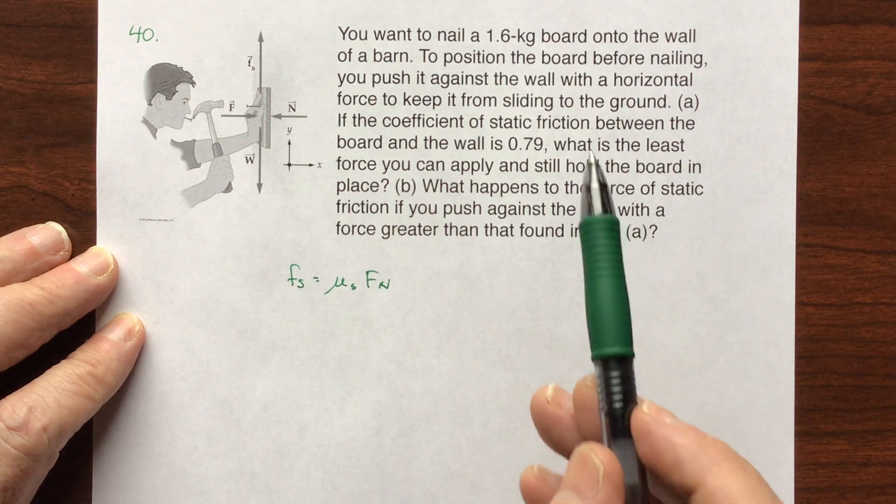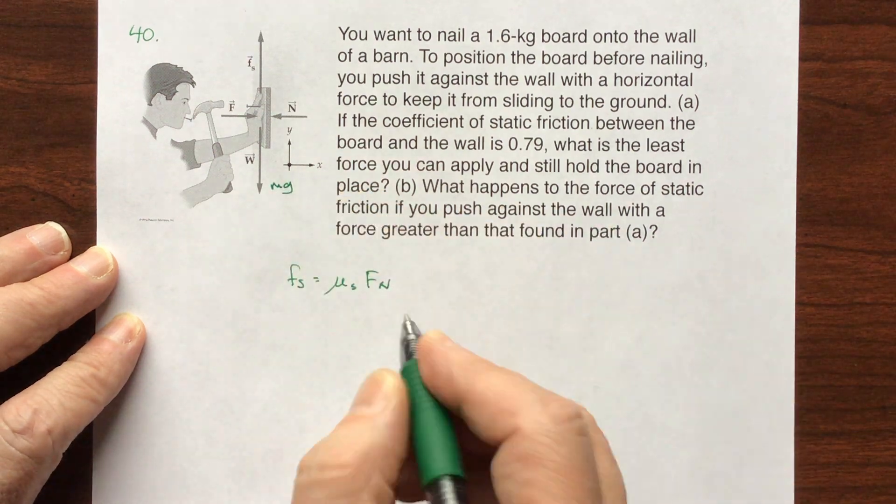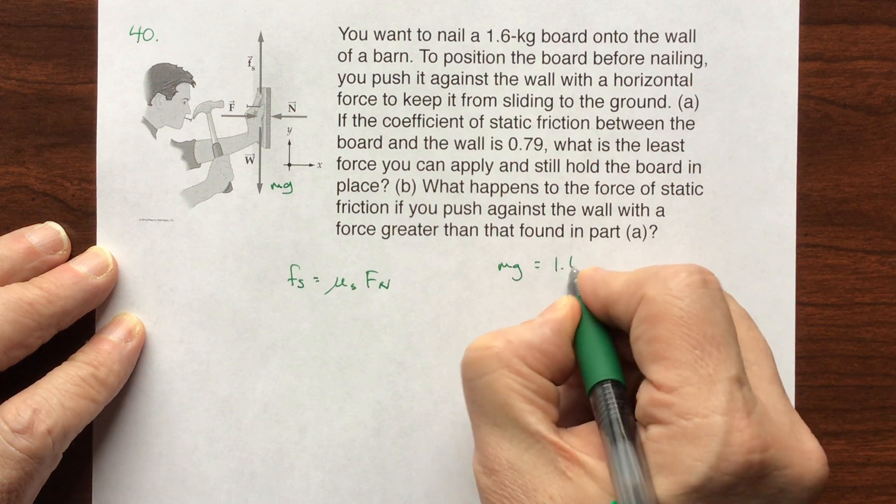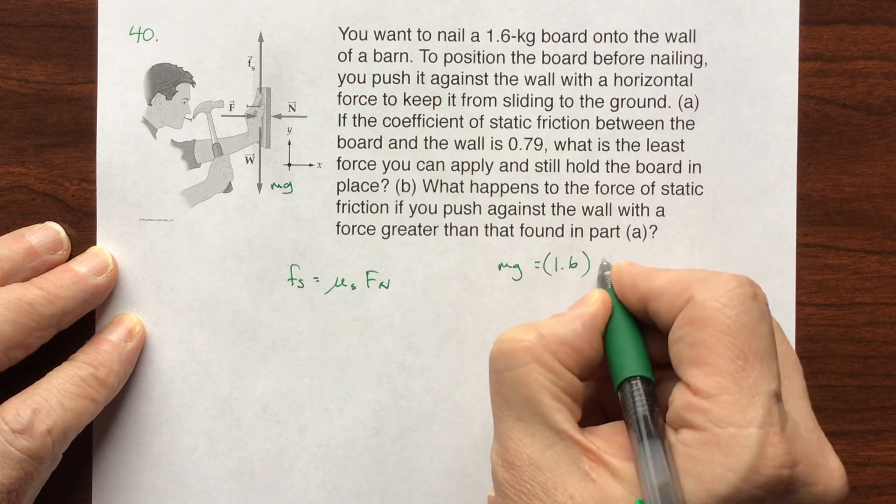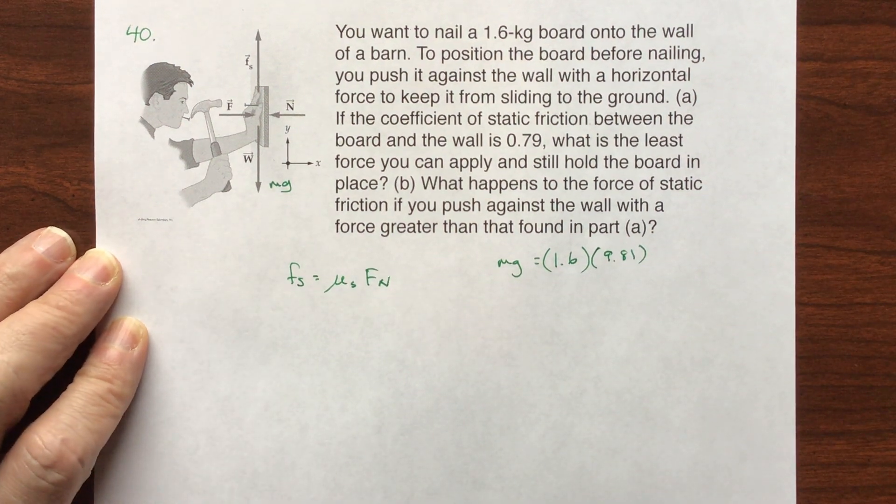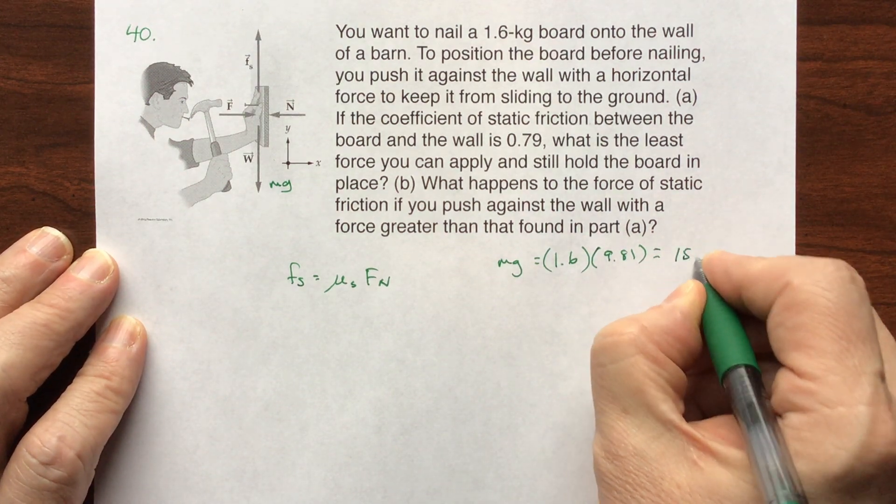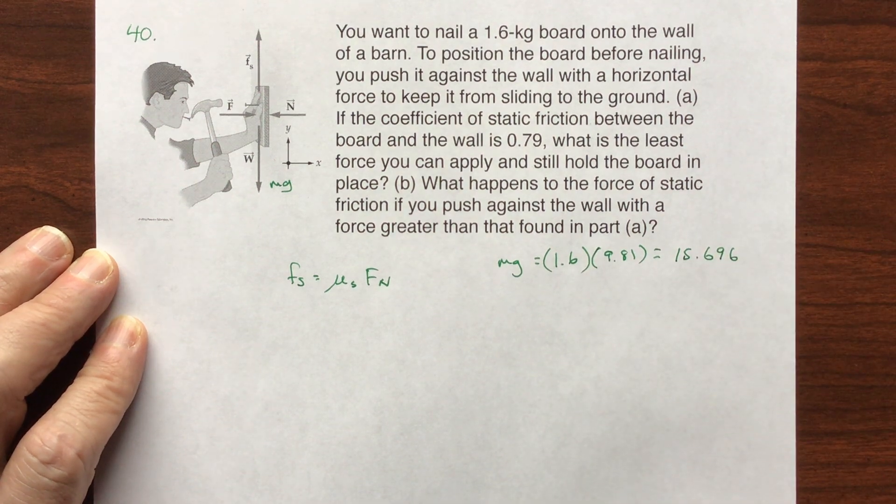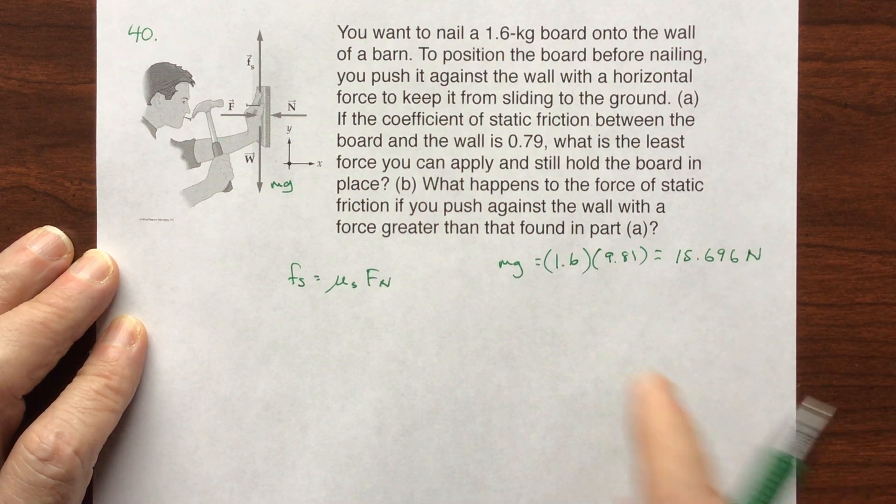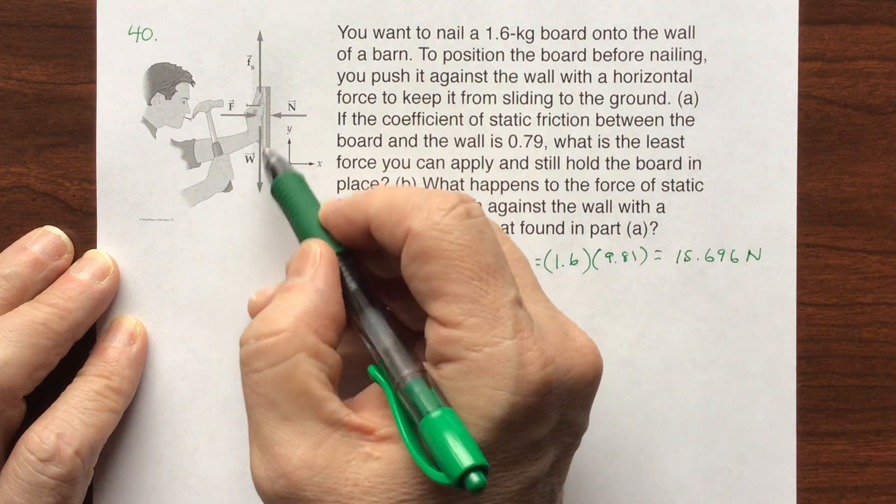They tell me the kilograms of the board. So weight is going to be equal to mg. mg is 1.6 kilograms times 9.81, so that's going to be 15.696 newtons. I'll do all the rounding at the end.